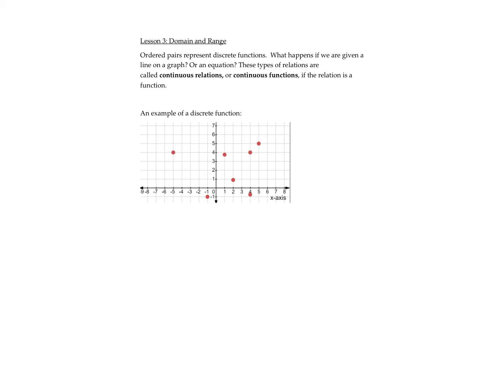In this lesson we're going to look at how to determine the domain and range of relations. There are two types of functions. The first type is called a discrete function, which occurs when we just have select points. For example, there's a graph here where some points are indicated with no points in between — it's not a line or any particular equation, just ordered pairs or points.